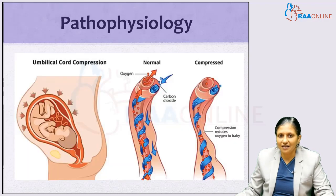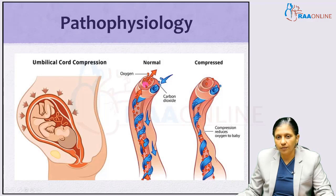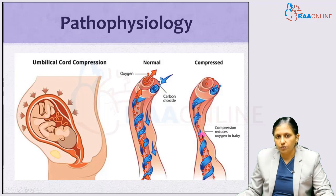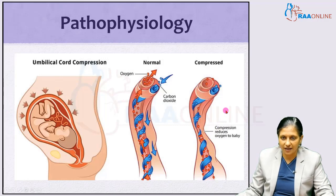Here we can see the umbilical cord, which contains two arteries and one vein. When the cord is normal versus when it is getting compressed, there is a reduced oxygen and blood supply to the baby. Whenever the umbilical cord gets compressed, blood flow to the baby is reduced, causing fetal hypoxia and fetal distress. The cord gets compressed between the fetal presenting part and the maternal pelvis.